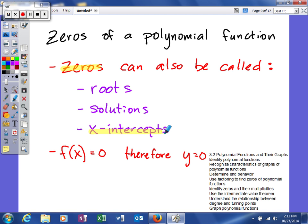That f(x) is equal to zero. Therefore, what that means is that y is equal to zero. So when you think about x-intercepts, all your x-intercepts will have a y-value of zero. So it'll be something a, comma, zero.